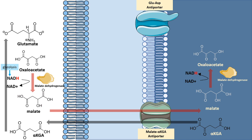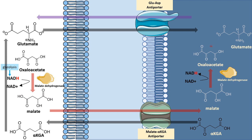Glutamate re-enters the mitochondria via the glutamate-aspartate antiporter, so alpha-ketoglutarate and glutamate are interconvertible. The oxaloacetate produced from malate inside the mitochondria would be converted to aspartate via transamination. Aspartate can then move out via the glutamate-aspartate antiporter into the cytosol, while glutamate comes in — completing the cycle.